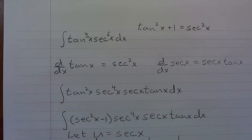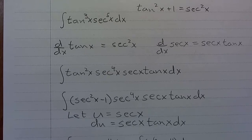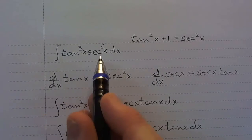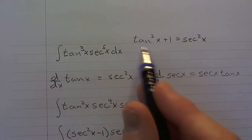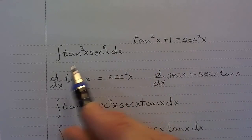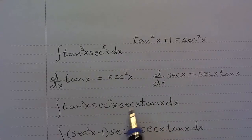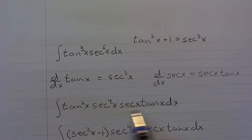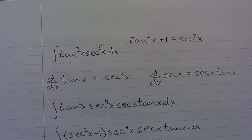The idea with these trigonometric integrals is to think about Pythagorean identities, and then if we have sine or cosine together, we try to set it up so we can let u be one and du be the other part. The same approach applies to tangent and secant: use Pythagorean identities and set up the substitution so u is one function and du works out to be what remains.